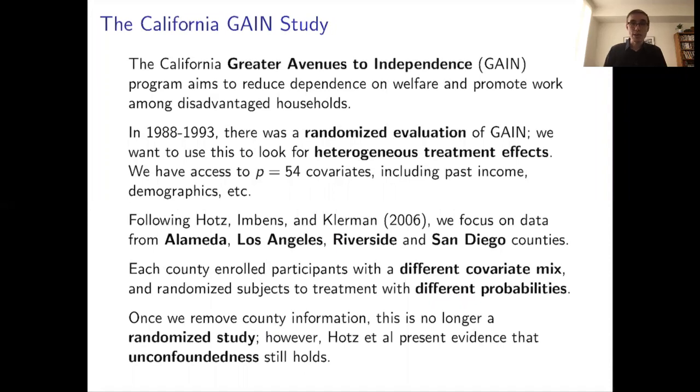So for this purpose, we need access to a data set that mirrors something you might encounter where realistically you might believe unconfoundedness would hold. That is not a randomized trial, but where you have access to covariates x, and it's at least somewhat plausible that treatment would be as good as random once you condition on x. For this purpose, I'm going to work based on the California GAIN study. So GAIN, or Greater Avenues for Independence, is a welfare to work program that is a jobs training program that sought to help people get off welfare and rejoin the workforce. And here we're going to work with data from a randomized evaluation of GAIN that was conducted in the early 90s.